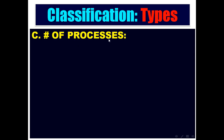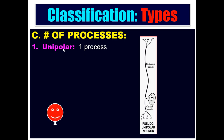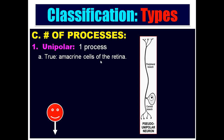According to the number of processes, we have three types. Unipolar neurons have only one process. True unipolar neurons have only one process and are present in the retina, such as amacrine cells. Pseudo-unipolar nerve cells have a short process which divides into two branches: a central branch acting as an axon, and a peripheral branch acting as a dendrite. Pseudo-unipolar neurons are present in sensory ganglia like dorsal root ganglia and cranial sensory ganglia.